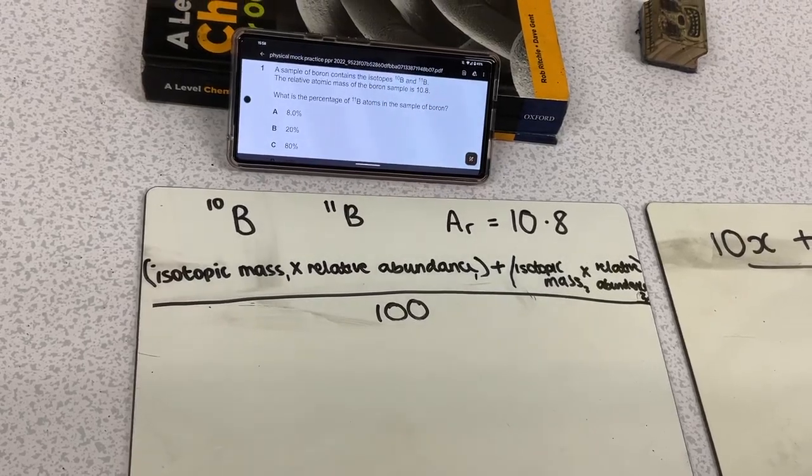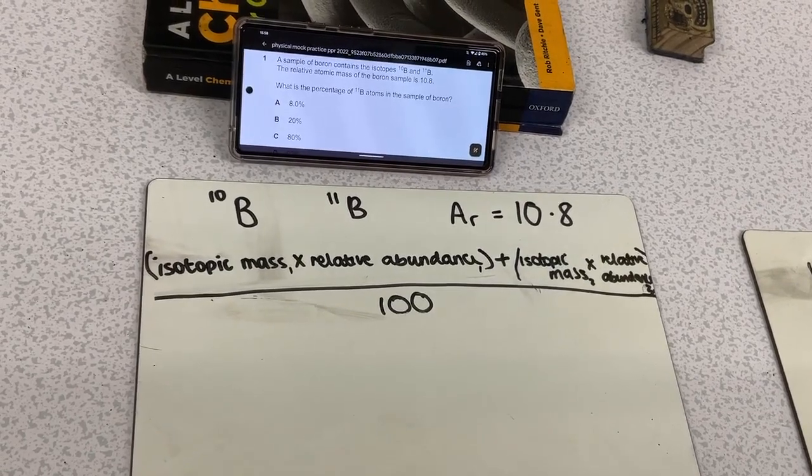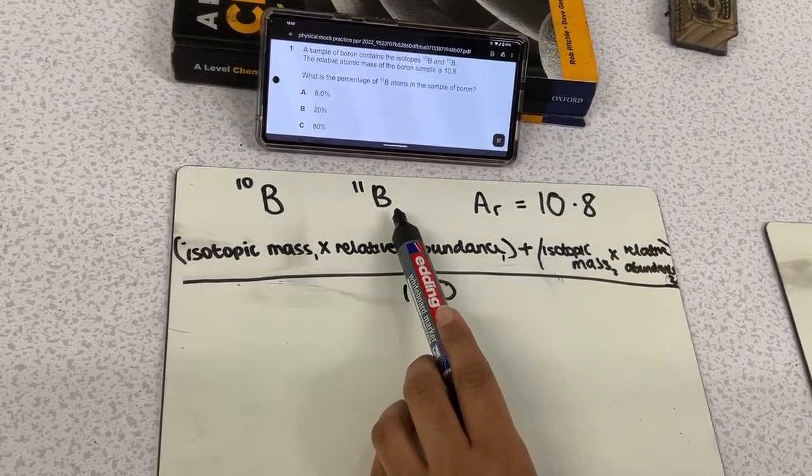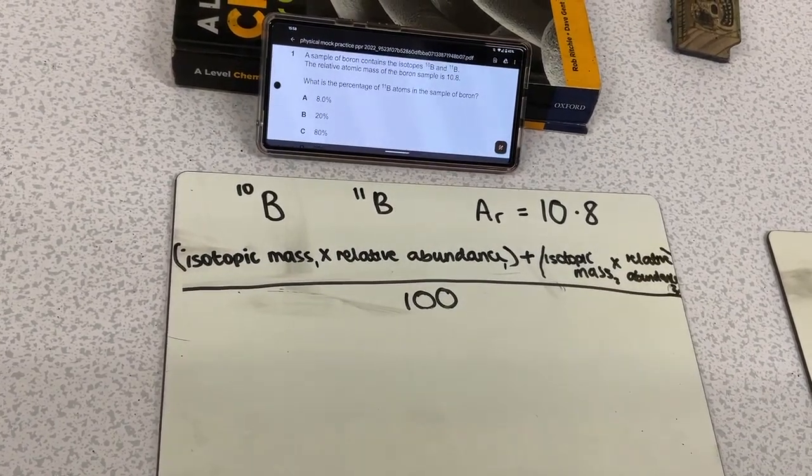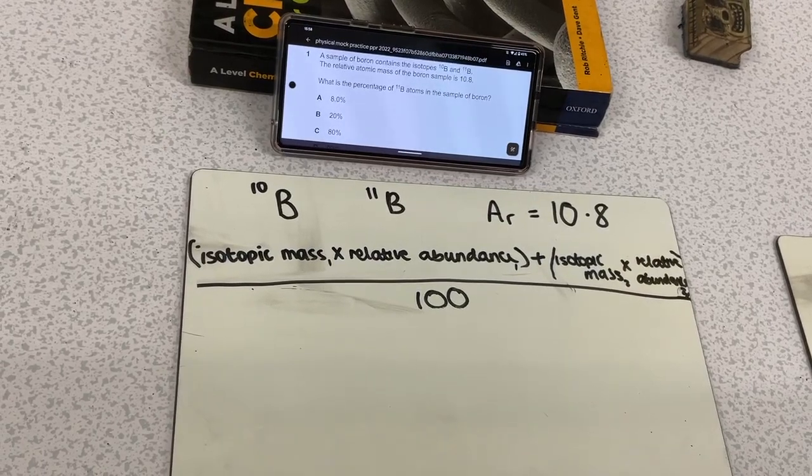We're going to be looking at the first multiple choice question in the 2018 physical mock paper. The question is, a sample of boron contains the isotopes boron-10 and boron-11. The relative atomic mass of the boron sample is 10.8. What is the percentage of boron-11 atoms in the sample of boron?